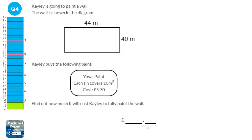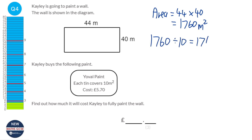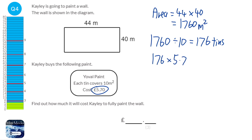First we need to work out the area of the wall by multiplying 44 by 40, which is 1,760 metres squared. Each tin covers 10 metres squared, so we will need 176 tins. Each tin costs £5.70, so that's 176 times £5.70, giving us a price of £1,003.20.